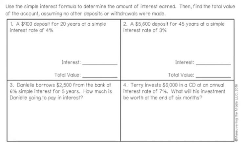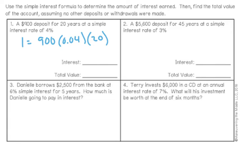The directions say to use the simple interest formula to determine the amount of interest earned, then find the total value of the account, assuming no other deposits or withdrawals were made. That means I need to find two different things. First, I'm going to set up my formula. The principal is the amount of money put into the account in this problem: $900.